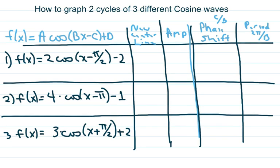Hi everyone. We're going to graph two cycles of three different cosine waves. If you didn't see my previous video on graphing all transformations together for sine and cosine, I suggest watching that because it's a little slower — we're going to go fast on this.